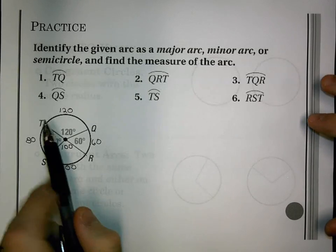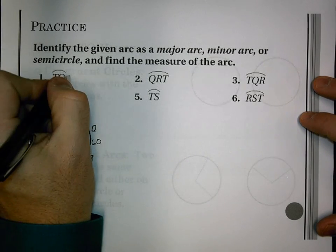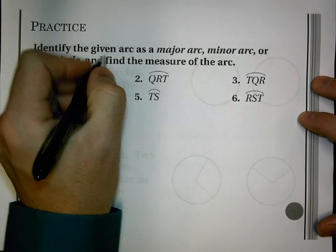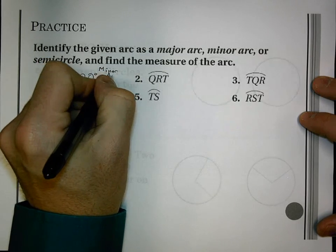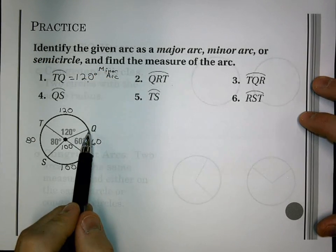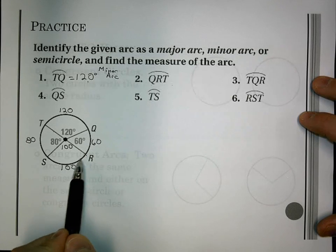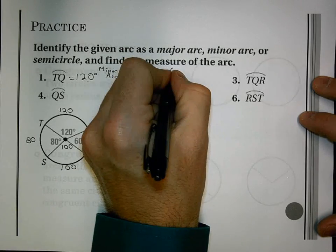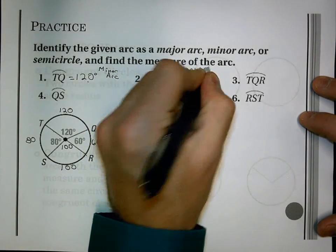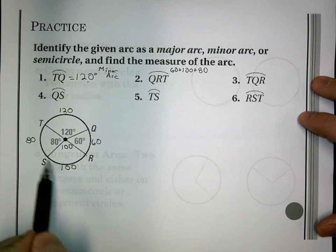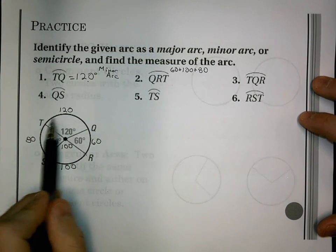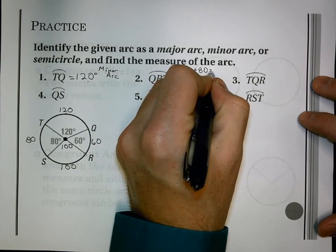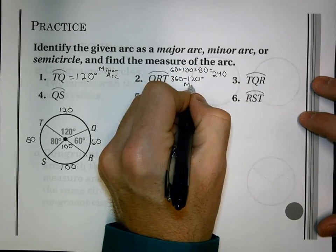So, we start with TQ. T to Q is 120 degrees. That's less than 180, so that's a minor arc. Q, R, T starts at Q, goes through R, ends at T. So, I could add 60, 180, or, as I go Q, R to T, I could do 360 minus 120. That's the piece not included. Either case, I get 240, and that is a major arc.